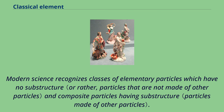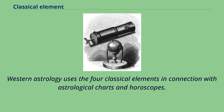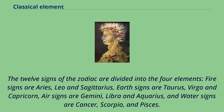Western astrology uses the four classical elements in connection with astrological charts and horoscopes. The twelve signs of the zodiac are divided into the four elements: fire signs are Aries, Leo, and Sagittarius; earth signs are Taurus, Virgo, and Capricorn; air signs are Gemini, Libra, and Aquarius; and water signs are Cancer, Scorpio, and Pisces.